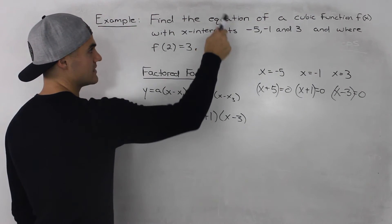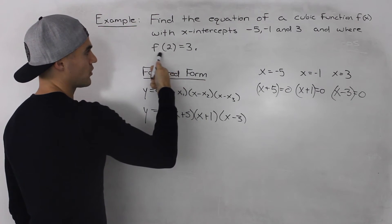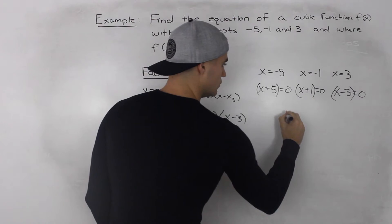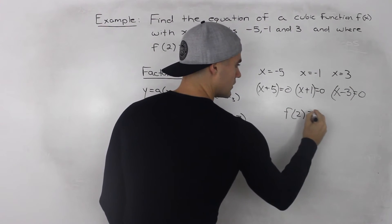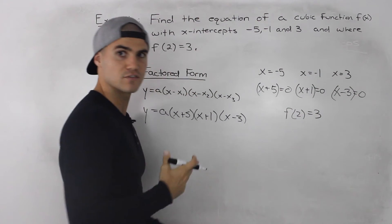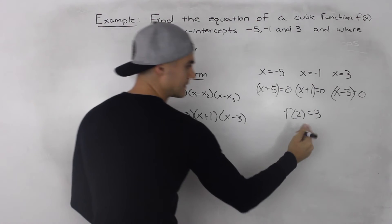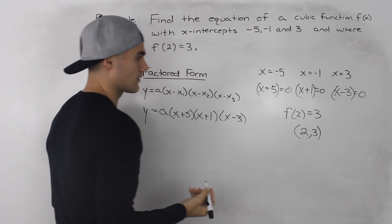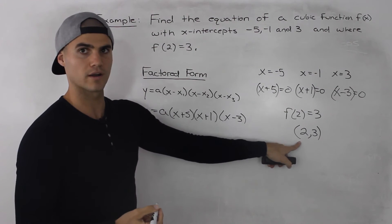We're given that this cubic function is going to go through this point f(2) = 3. Now f(2) = 3, if you remember back to function notation, we can rewrite that as (2, 3). That's just a coordinate right there. So this cubic function is going through this coordinate.